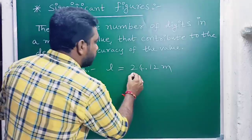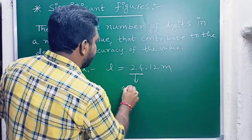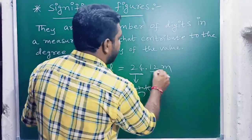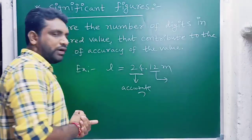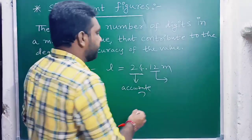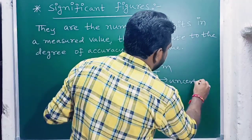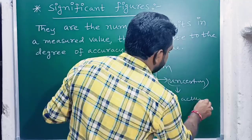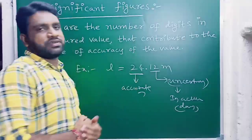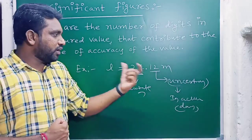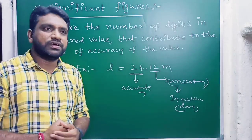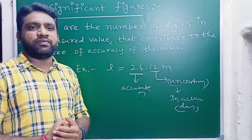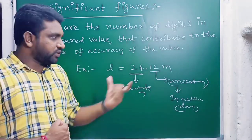From this value, '24' are accurate values. After the decimal point, '12' are indicating uncertain values — they are inaccurate, simply doubtful values. That is the purpose of significant figures: they tell us what are the accurate and what are the inaccurate values in any measurement.